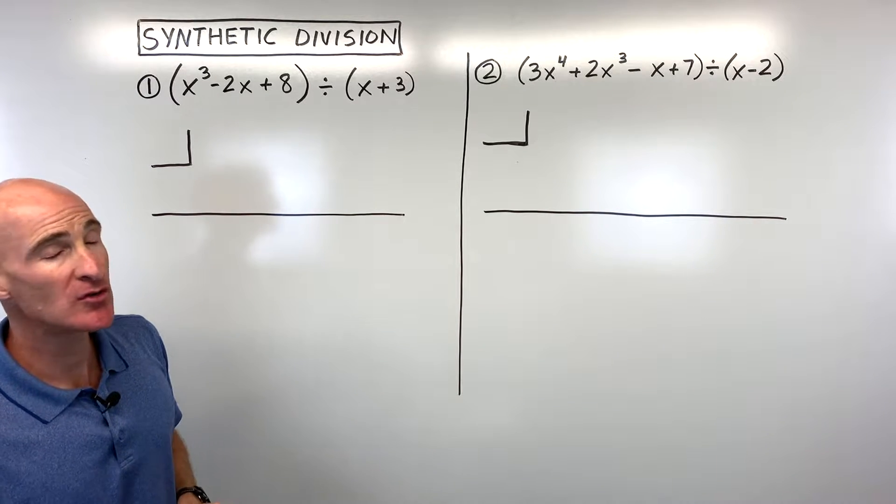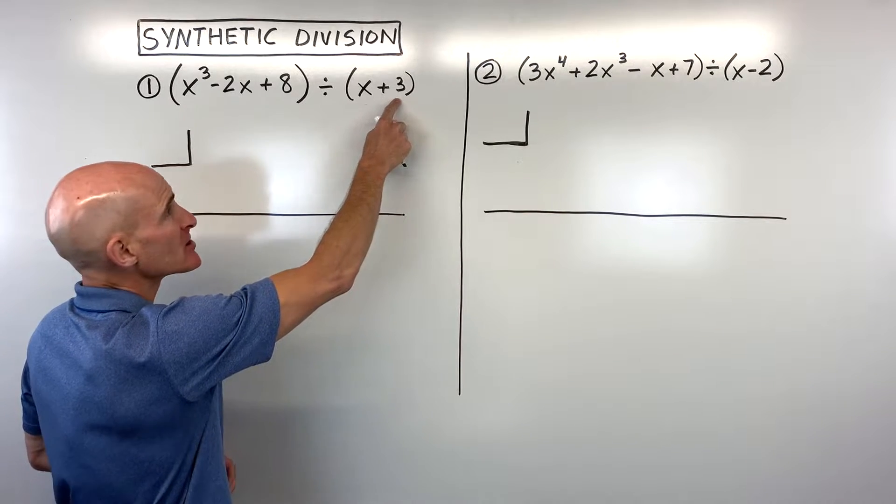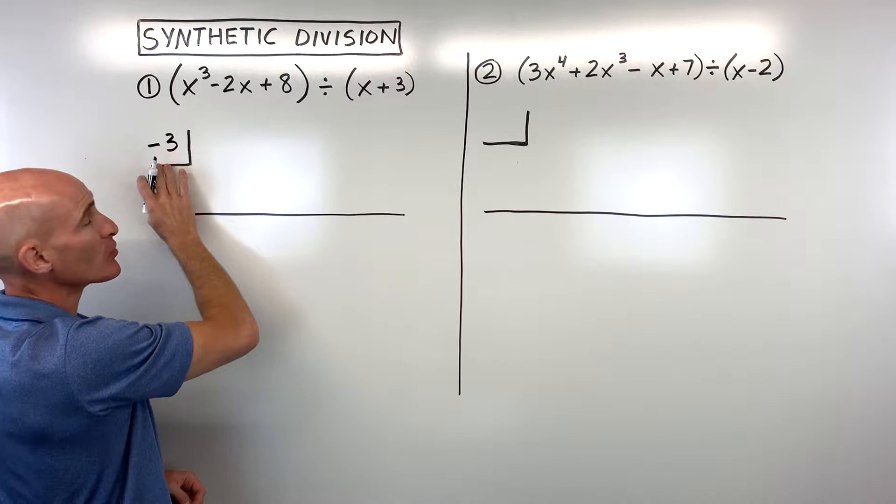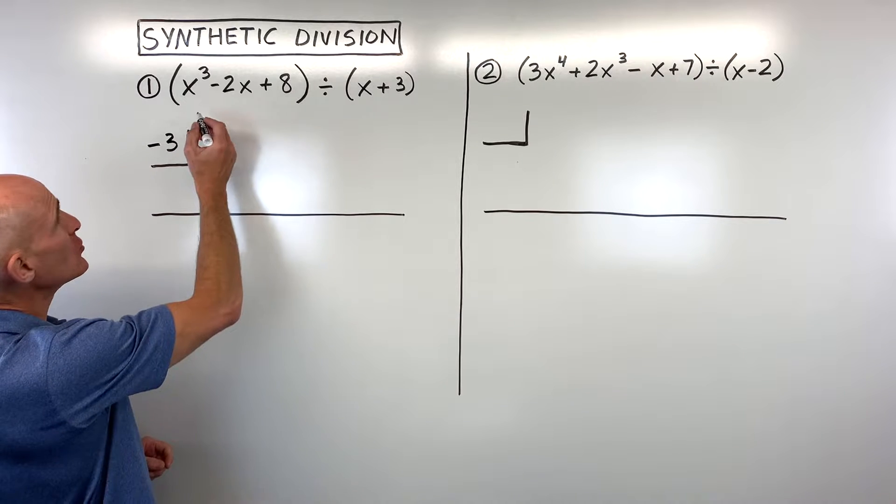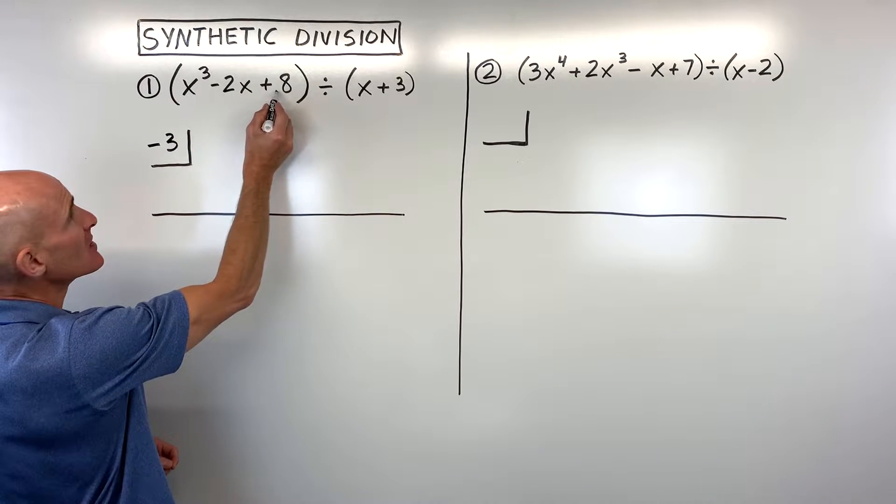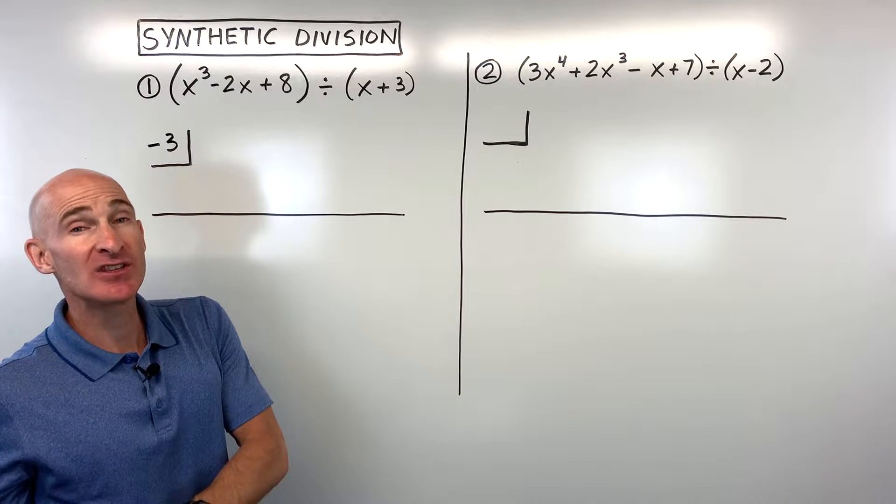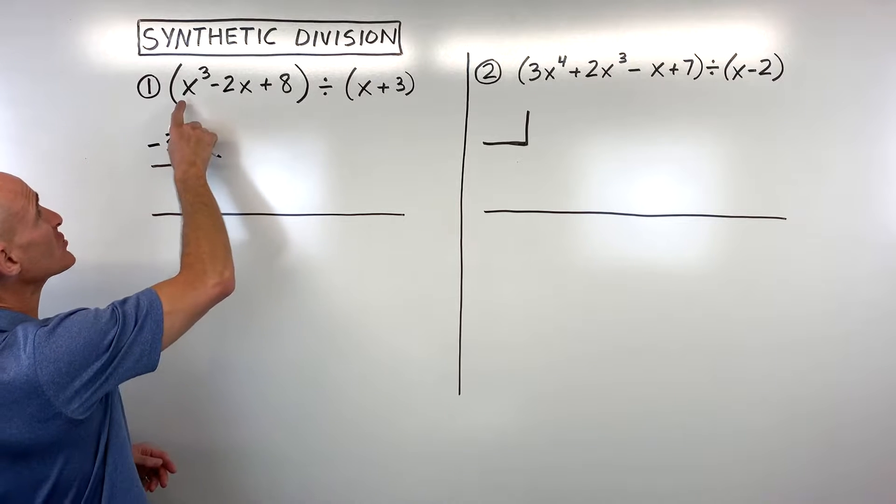And what we do when we do the synthetic division is if you're dividing by x plus 3, you're actually going to put a negative 3 up here. If it's a minus 3, then you're going to put a positive 3. So that sign is the opposite. And then what you want to do is you want to write the coefficients of the numbers that come in front of the variables, paying attention that if you're missing any terms in the polynomial, that you put a 0 for a placeholder.